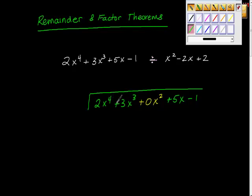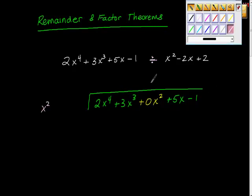So here we have x to the 4th, x to the 3rd, x squared, x to the 1st, and this is x to the 0, because x to the 0 is 1. Then I'm going to divide by this. Here's a clue: when we do polynomial division, we use the lead term to divide by. I'm going to write all the rest of this in, and that will make sense in just a second.